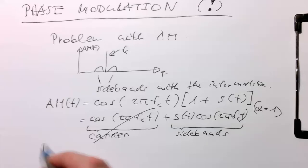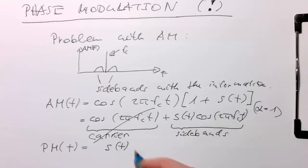if I just squeeze it underneath here and now I call this PM for phase modulation, then we have just S of T cosine of 2 pi FC T. And so we see phase modulation is.